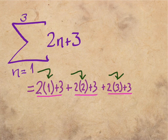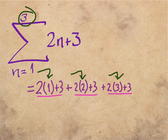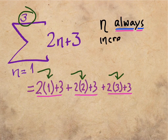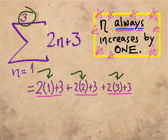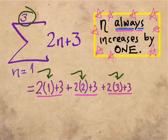Notice a very important thing right here: n increased — one, two, three — and it stops there at three. n always increases by one. Please don't forget that. No matter what situation you end up with in the sigma notation, the value of the variable n always increases by one.